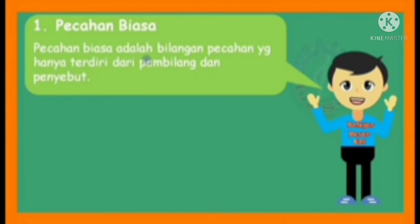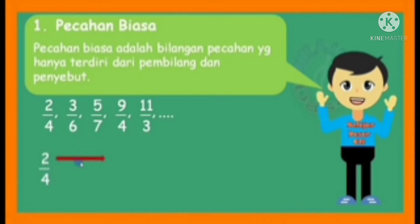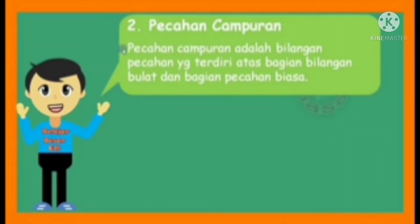Pecahan biasa adalah bilangan pecahan yang hanya terdiri dari pembilang dan penyebut. Misalkan contoh: 2/4, 3/6, 5/7, 9/4, 11/3, dan seterusnya. Perhatikan 2/4: 2 itu sebagai pembilang dan 4 itu sebagai penyebut. Yang atas itu sebagai pembilang, kemudian yang bawah itu sebagai penyebut.